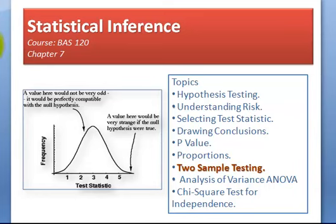Welcome back to BAS 120. We're working on chapter 7, part 5. In the first four parts, we talked about hypothesis testing where we have one sample and we're comparing it to an assumed population and null hypothesis.